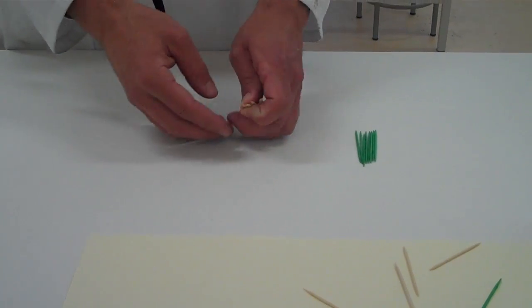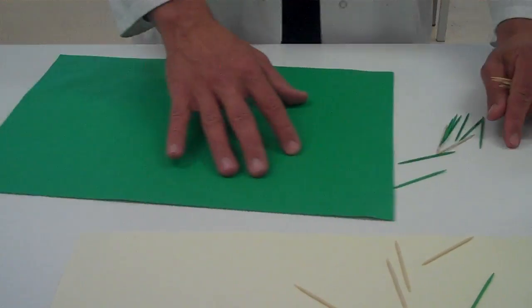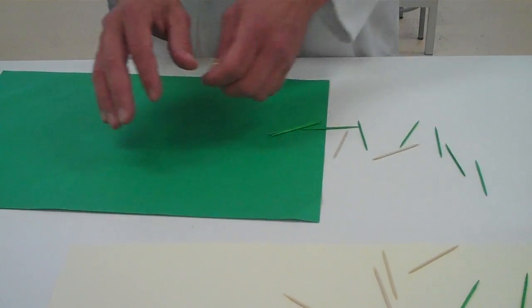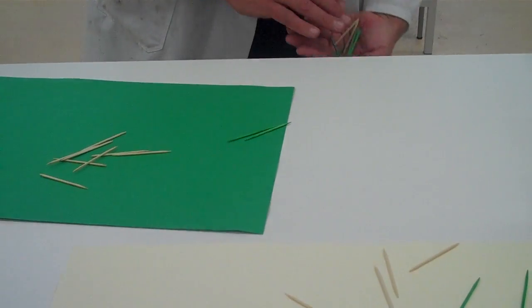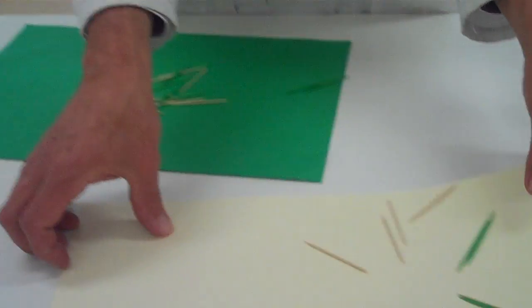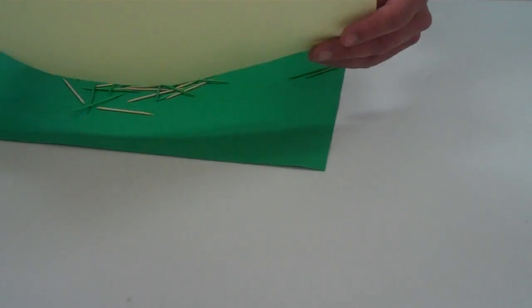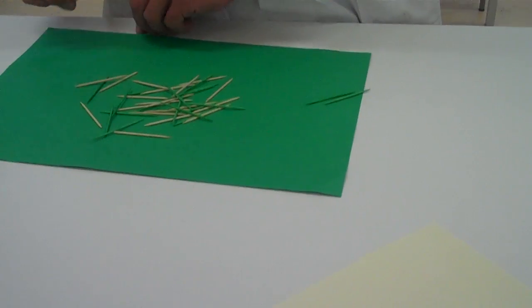Then you repeat the experiment but with the opposite color. So the 20 toothpicks go back on. Making sure we don't lose any.